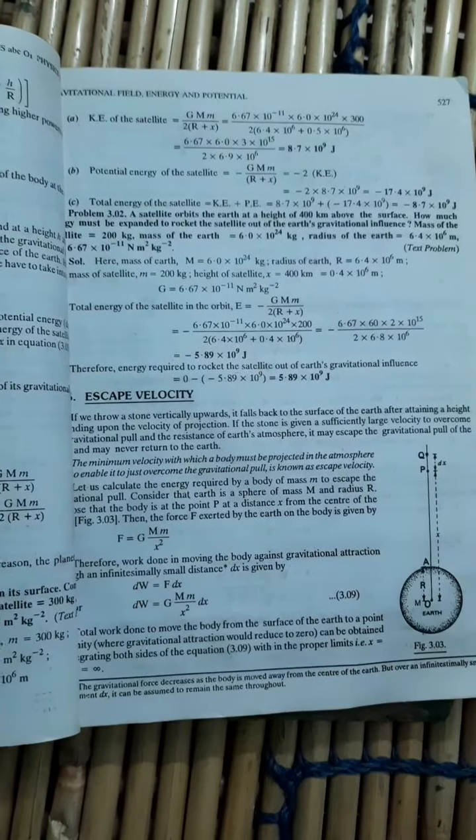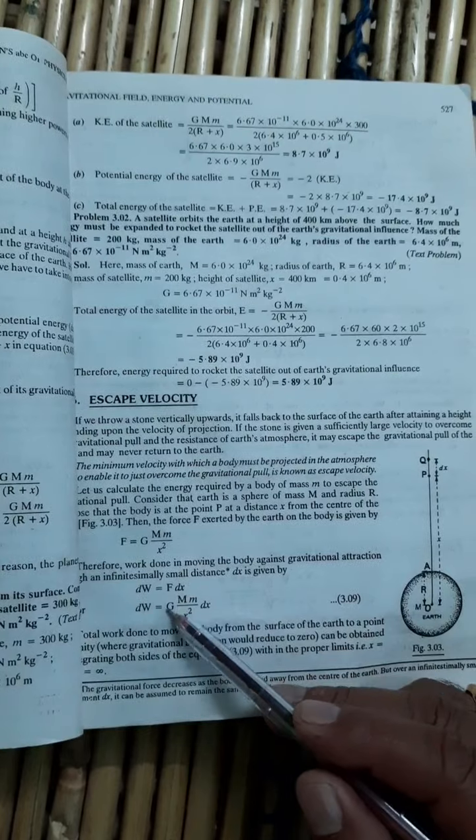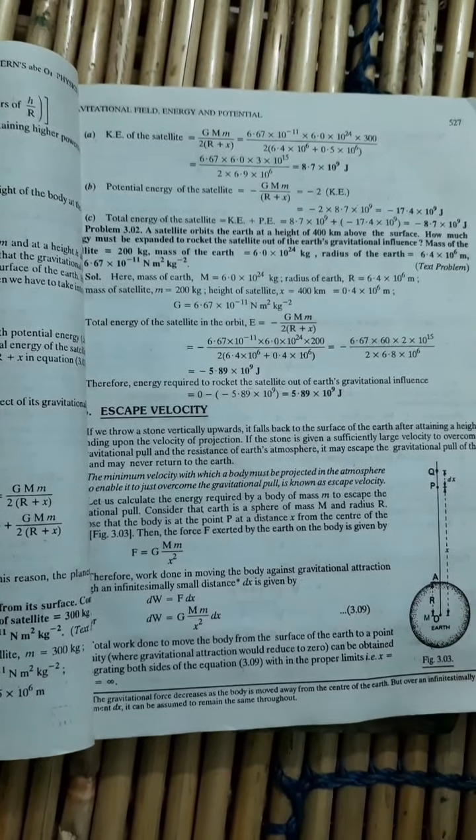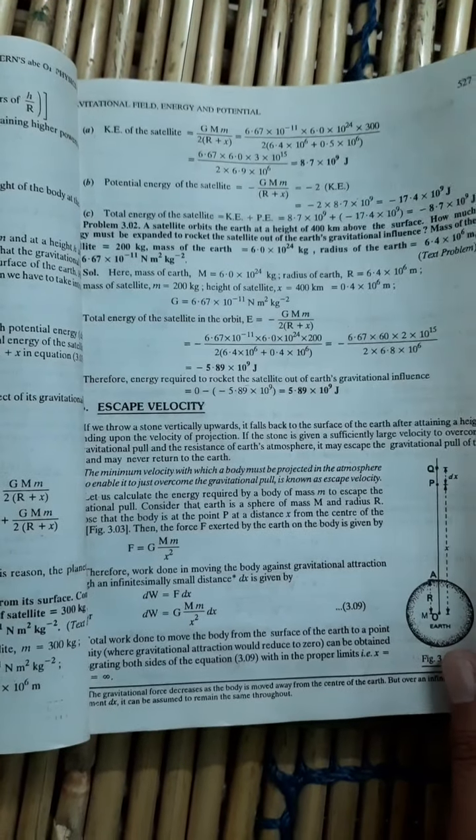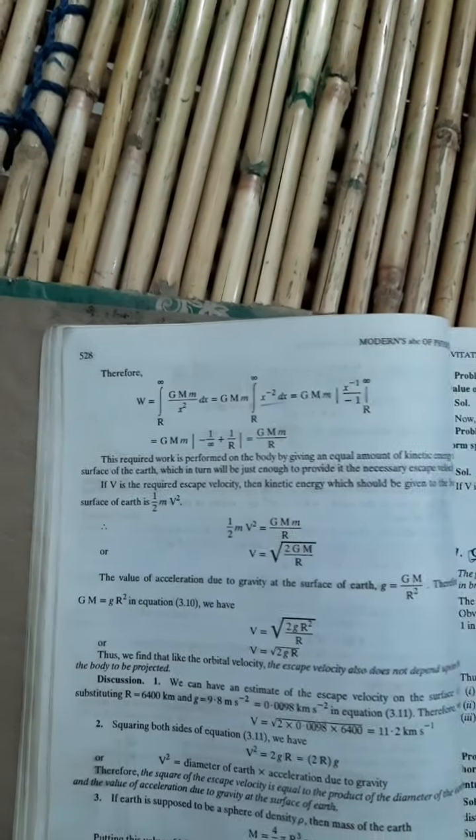So what will be the dW? Because I am throwing it away, gravitational work done will be force into displacement. So what is the force? This dx is the displacement. Force and displacement both are opposite to each other. That is why dW will be GMm upon x square into dx. The same way, what you will get here.